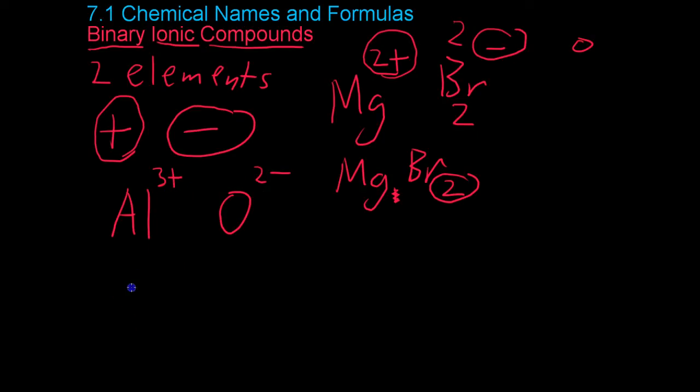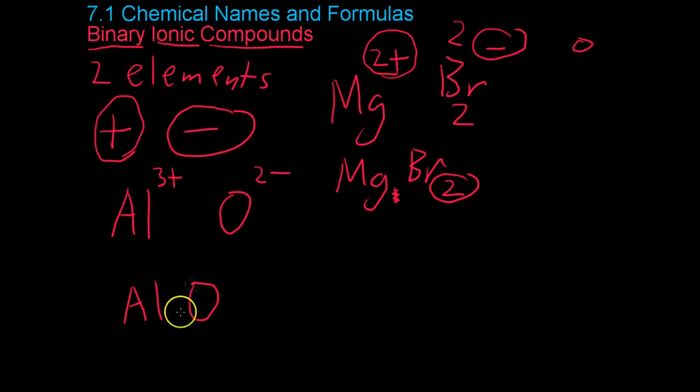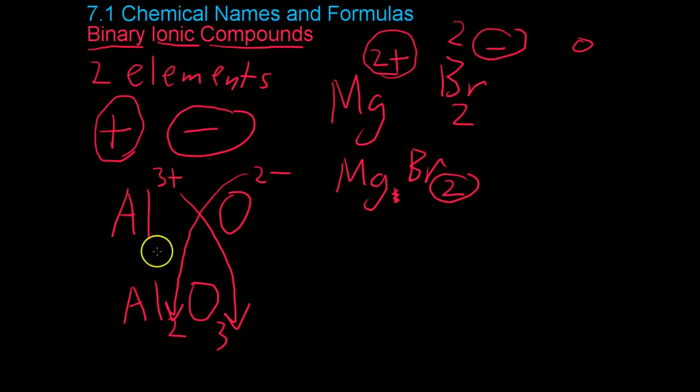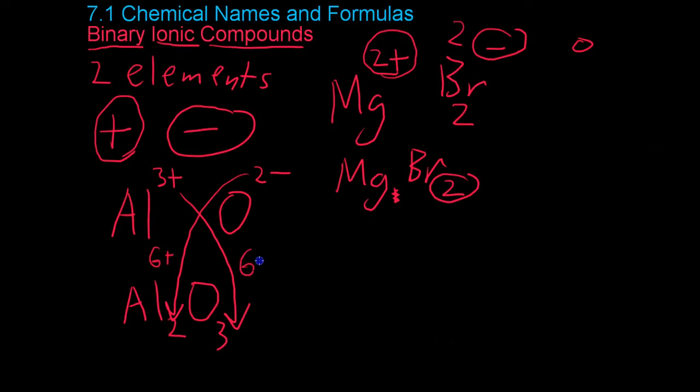Then what you do is you rewrite the elements down here as you would when they're combined, and you cross over the two numbers as the subscripts. So in this case, you'd end up with a compound that is 2 aluminums and 3 oxygens. And if you do the math, you multiply 2 by 6 to get 6 positives, and 3 by 2 to get 6 negatives, and add them together, you get the net charge is 0.